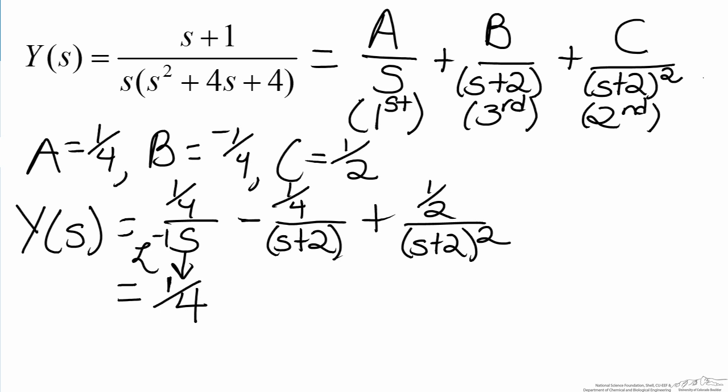So when we take the inverse Laplace transform of 1 quarter over s, that is just the generic step function which corresponds to a constant of 1 fourth. The second term is just a simple exponential if you look at your Laplace transform sheet where the exponential is raised to the negative power of the root here, therefore that will be 2 because of the fact that it is in the s plus b domain in your Laplace transform sheet. So this becomes e to the negative 2t, we keep the constant that floats out.